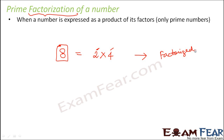Then what is prime factorization? When a number is written as a product of its factors such that all the factors are prime numbers. Now in this case, is 8 written as 2 into 4 a prime factorization of 8? No, because 2 is a prime number but 4 is not. 4 is a composite number, so this is only factorization of 8, not prime factorization.